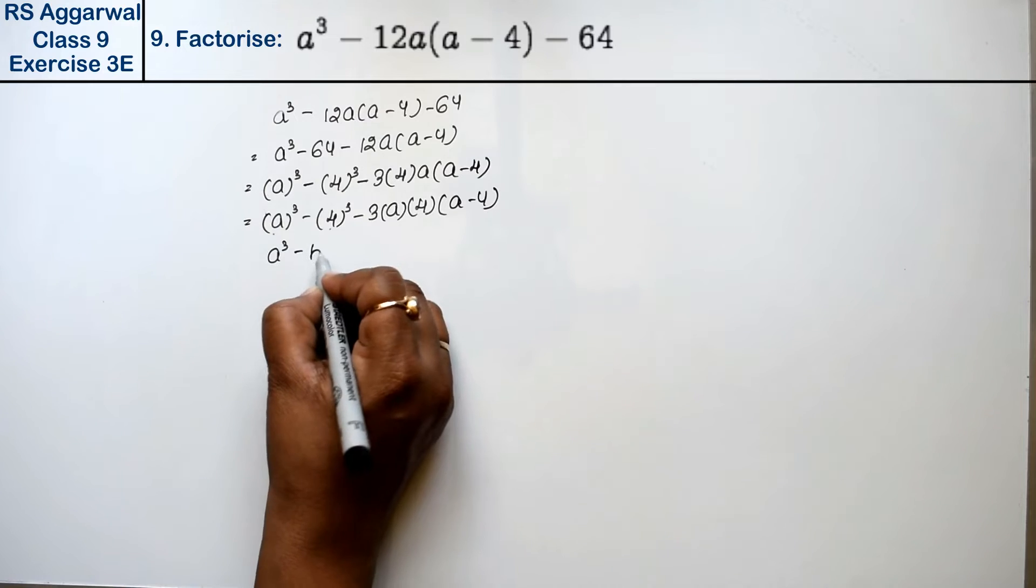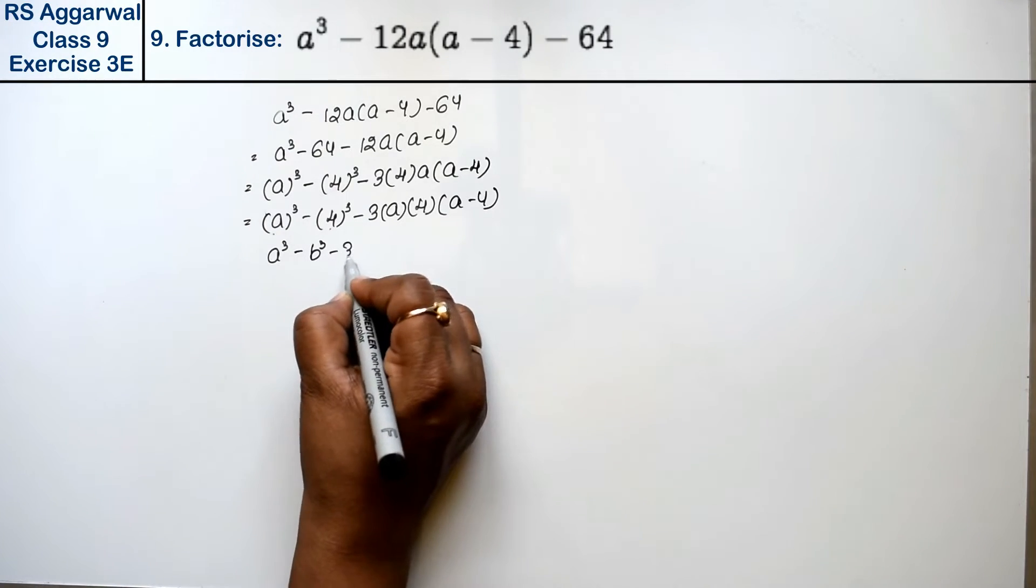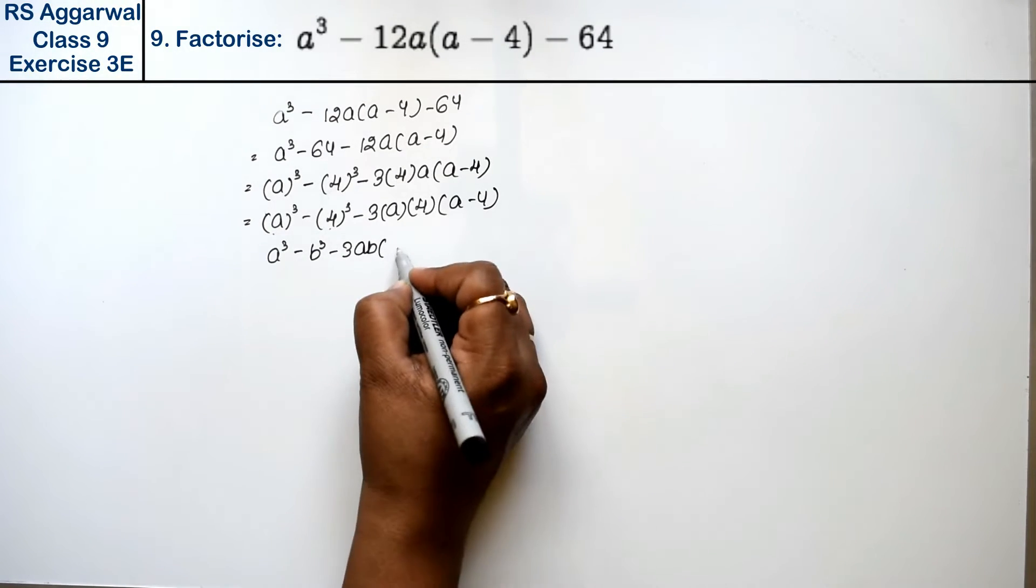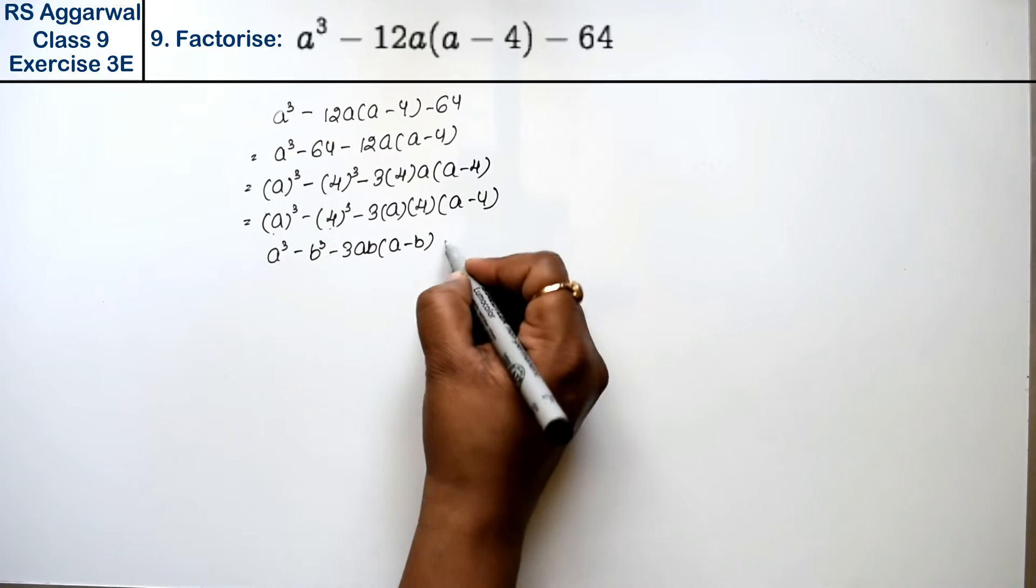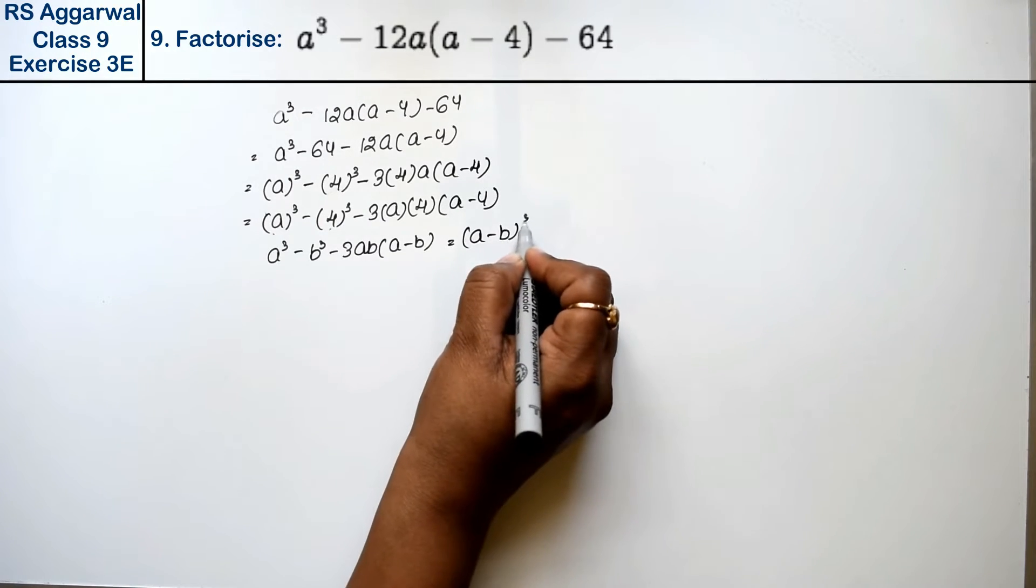Now see this pattern: a³ - b³ - 3ab(a - b). Which formula was this? This is (a - b) whole cube.